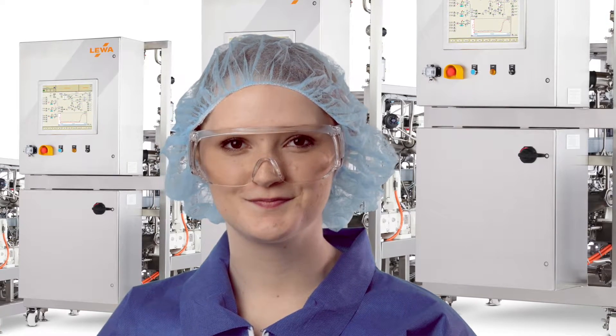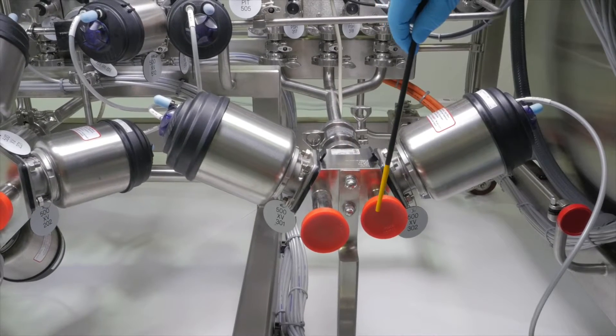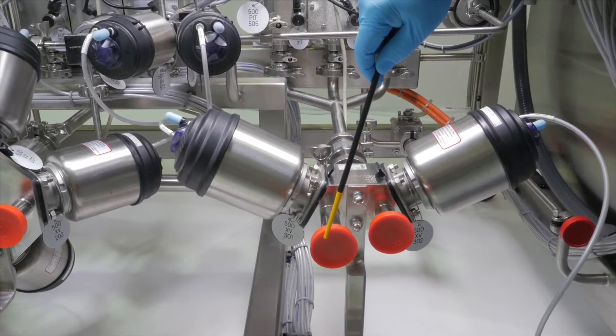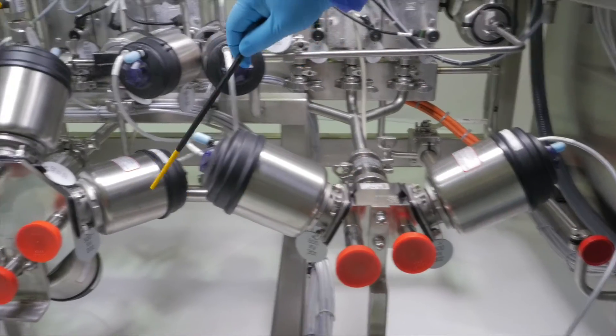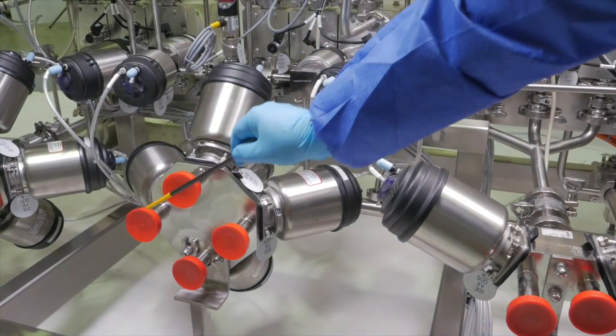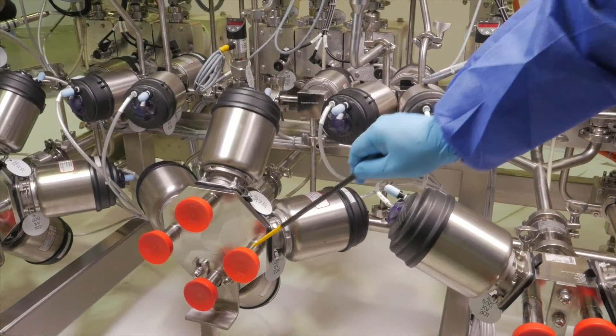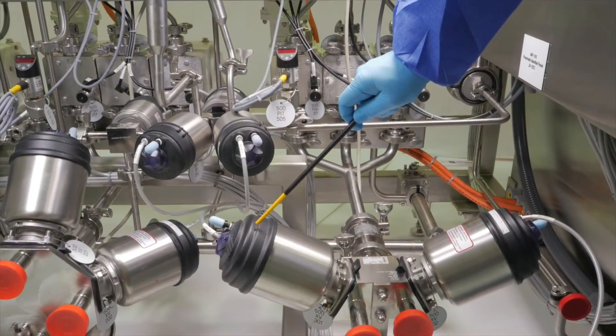So let's take a look at how the EcoPrime LPLC works. Buffers and feed solution enter through the inlet valves. Up to six valves can be selected for each pump. We use Berkert block valves that feature extremely low hold-up.